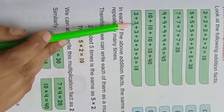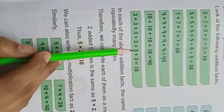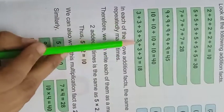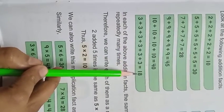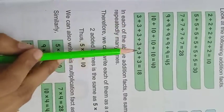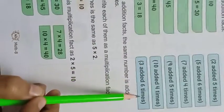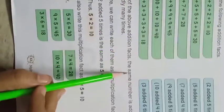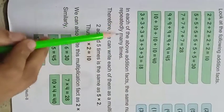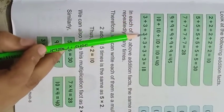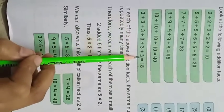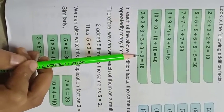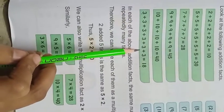Three ko dekhte hain. One, two, three, four, five and six. It means three is added six times. Jab three ko hum six times add karenge, toh hamne kya milega? Eighteen. Three, six are eighteen. In each of the above addition facts, the same number is added repeatedly many times. Yani, ek hi number baar baar add kiya jaata hai - repeat kiya jaata hai. Jis number ko aap jitne times repeat karte hain, woh uska multiplication ho jaata hai.